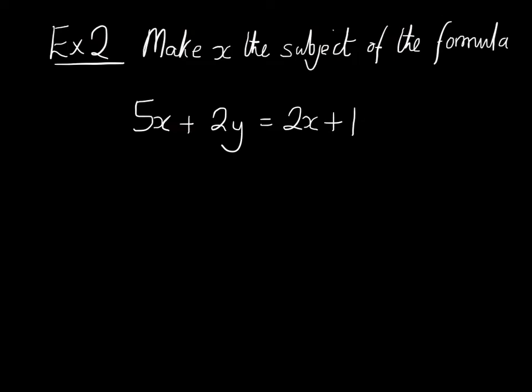Example 2. We want to make x the subject of this formula. Note, however, we have got 2x's. We've got 5x's on the left side and 2x's on the right. So let's just make all the x's go together. So let's subtract 2x's off both sides of the equation. So then I would get that 3x plus 2y is equal to 1.